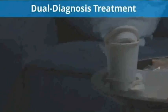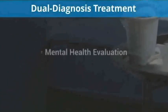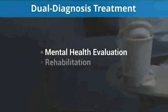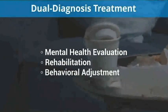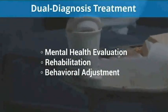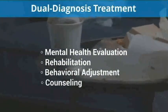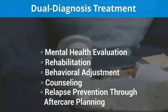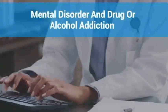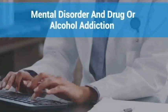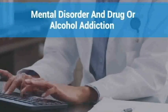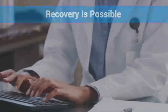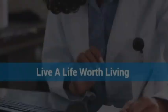Dual diagnosis treatment may include mental health evaluation, rehabilitation, behavioral adjustment, counseling, and relapse prevention through aftercare planning. Struggling with both a mental disorder and drug or alcohol addiction is never easy, but recovery is possible. Live a life worth living.